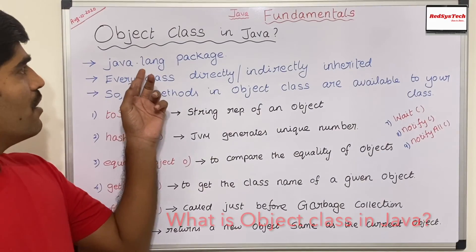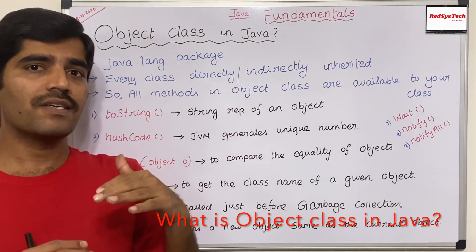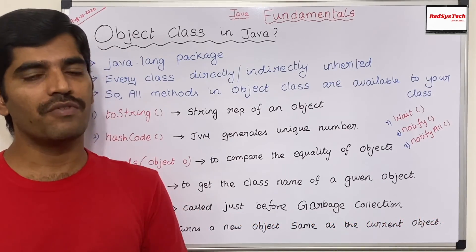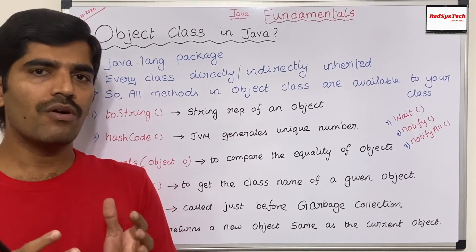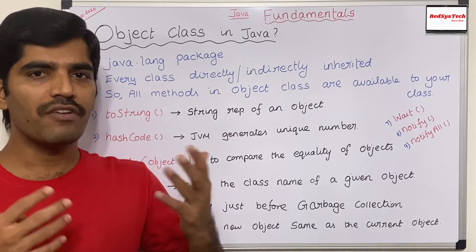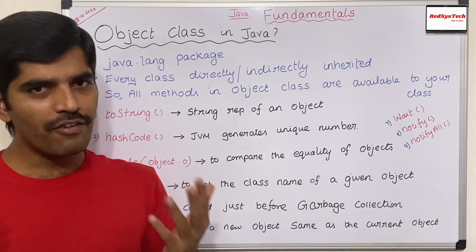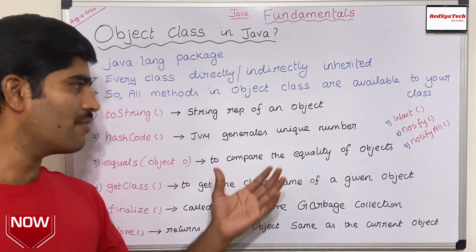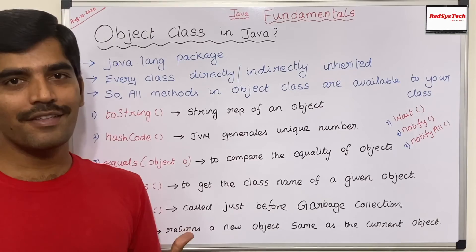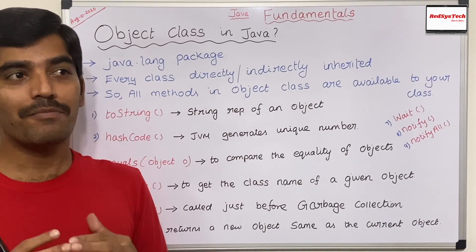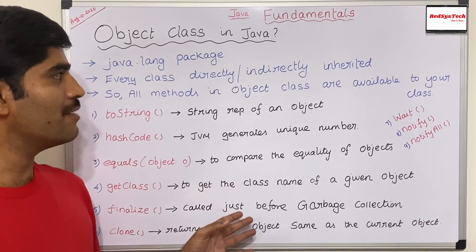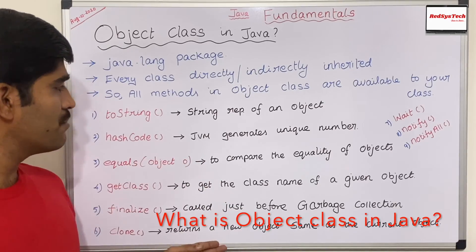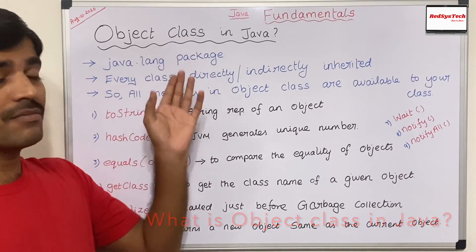So, Java Object class. The Object class is a class that the Java developers at Oracle or Sun Microsystems created when they were developing the Java language. They thought they wanted to develop some common modules, common methods, and common functionalities inside the language so that every developer can use them without needing to create these methods themselves — rather than writing them in our own logic, we can directly focus on our business logic.